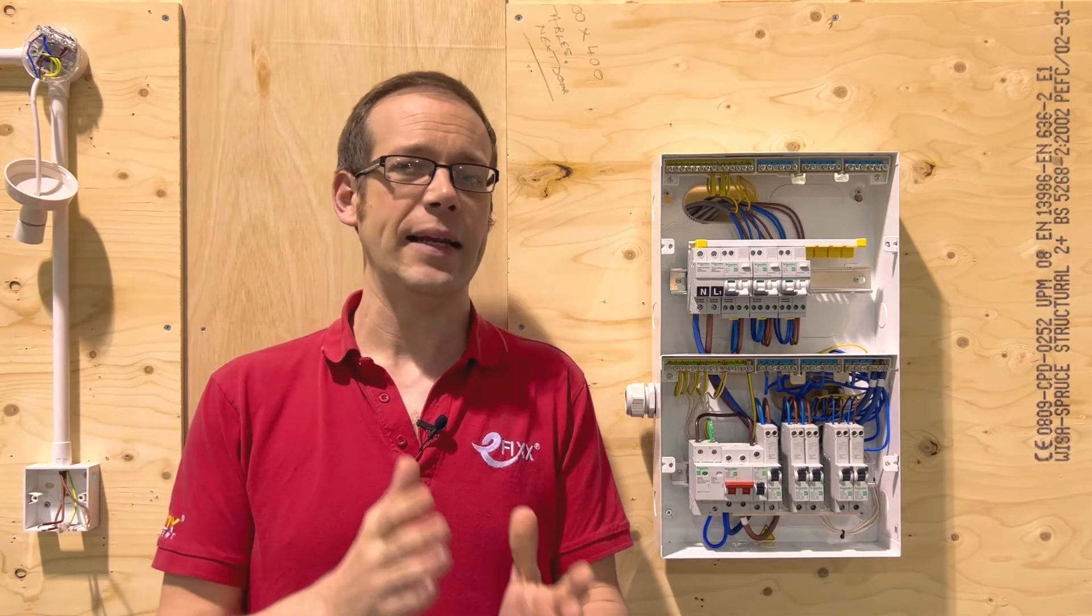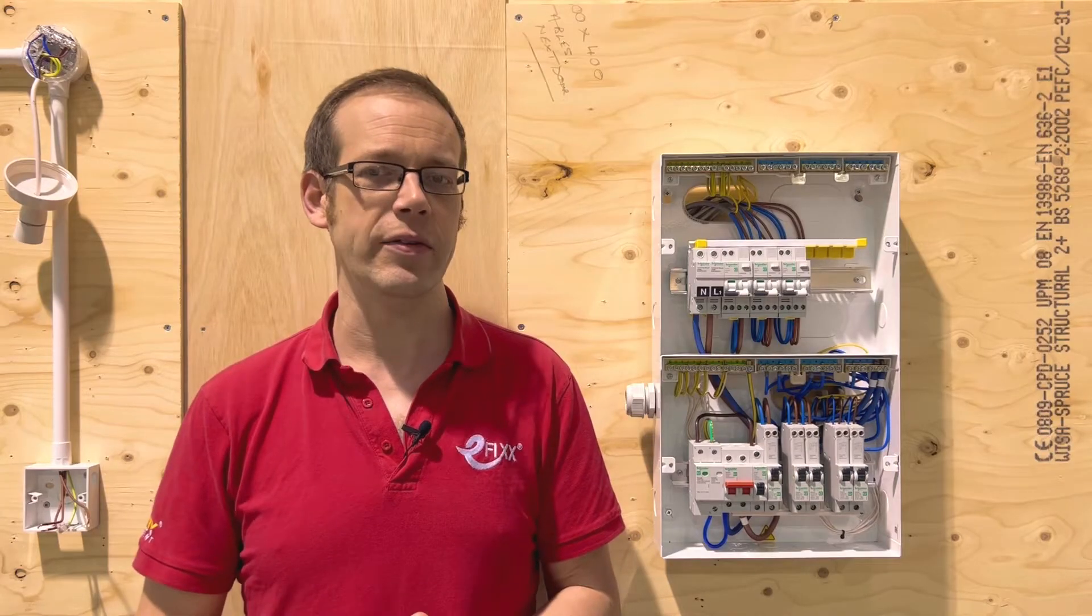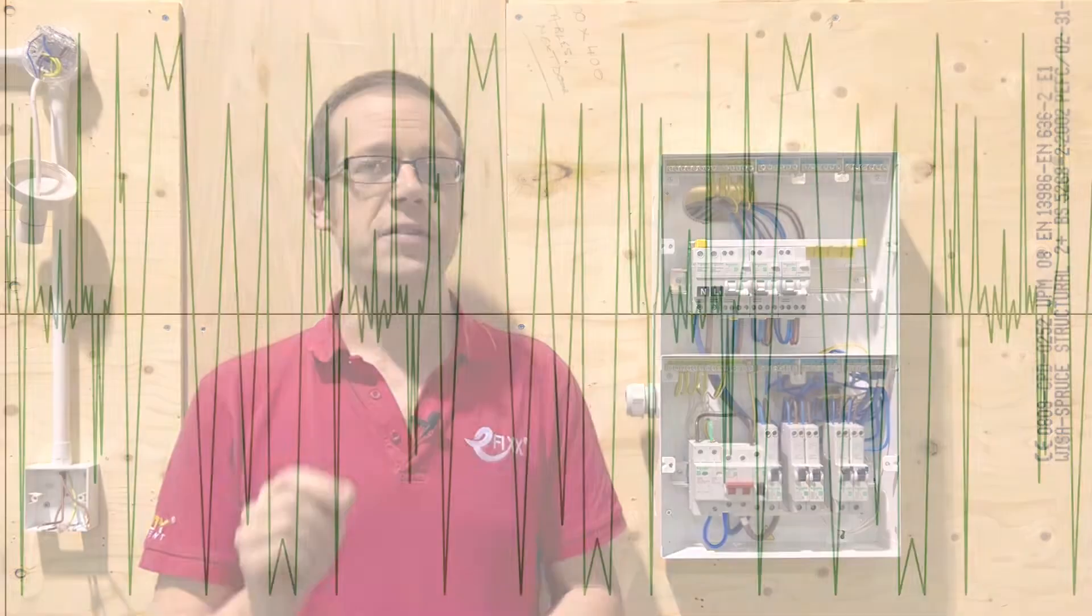Well the protective component in an AFDD is a little different to previously considered types of protective device. When an arc fault occurs it creates an instability in the current waveform of the circuit and turns it from looking all nice and smooth into a jagged mess as the current shoots up and down to create and maintain the arc.